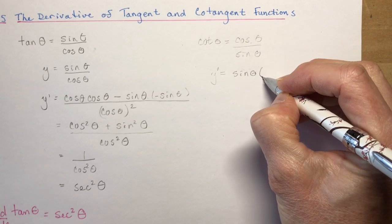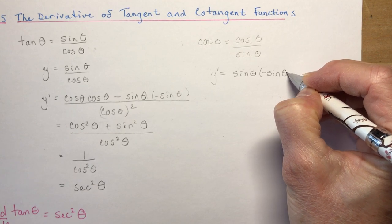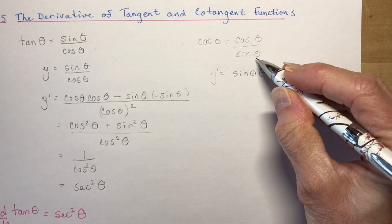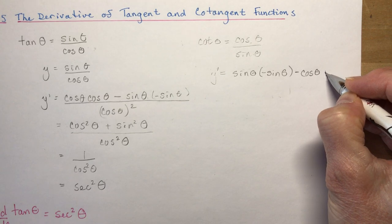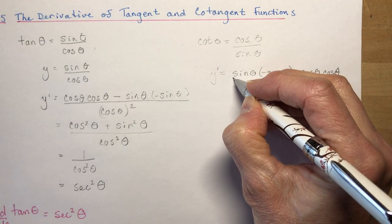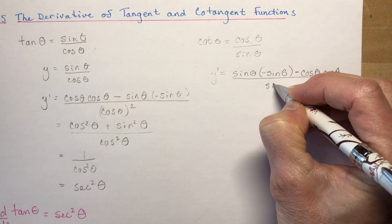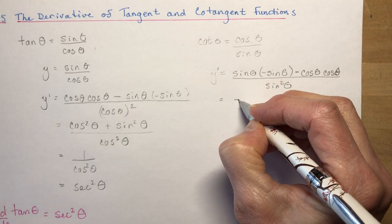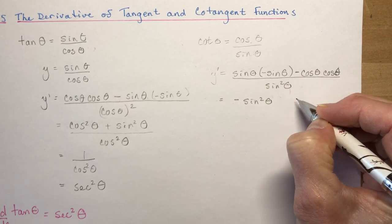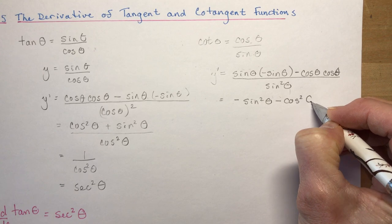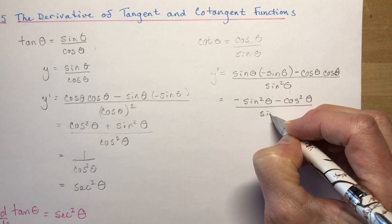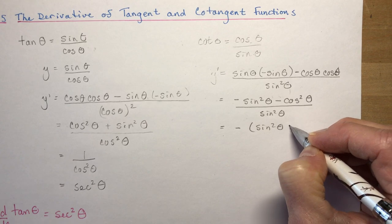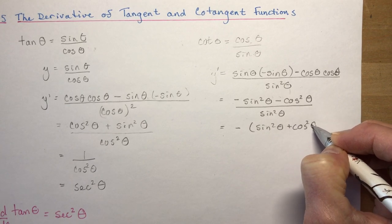Applying the quotient rule: ho times d-high gives sin θ times the derivative of cos θ. Since cos starts with a 'c', it goes negative: negative sin θ. Then minus high times d-ho gives cos θ times the derivative of sin θ, which is cos θ, all over sin² θ. The numerator becomes negative sin² θ minus cos² θ. Factoring out a negative sign gives us negative(sin² θ + cos² θ), which equals negative 1.